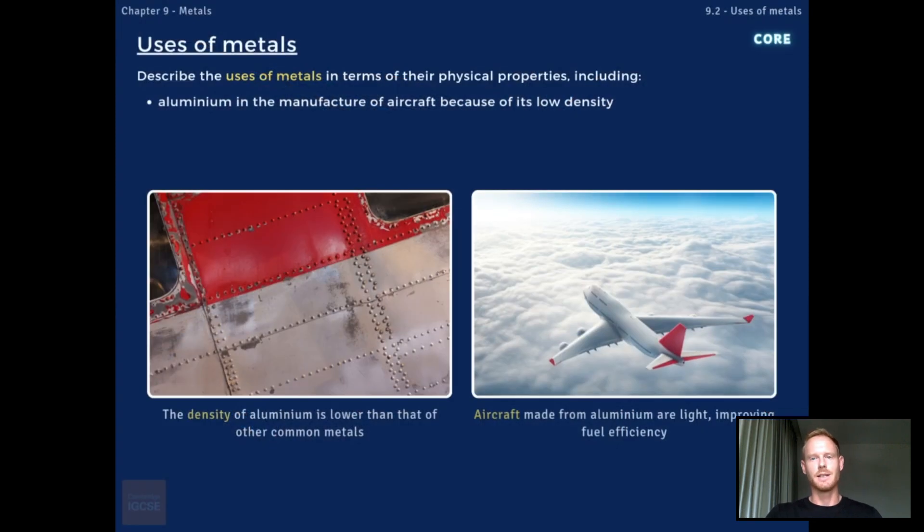So aluminium has a density much lower than that of other common metals, about one third of that of steel. This makes the planes lighter, which improves fuel efficiency because less propulsion is required to keep them in the air.